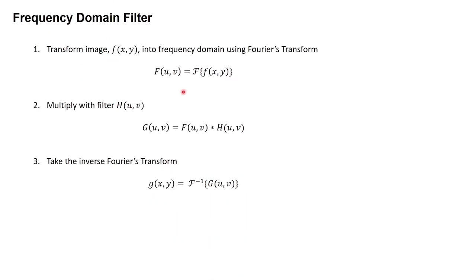In theory, if you want to apply an image filter in the frequency domain, first you need to transform your image from the spatial domain to the frequency domain using the Fourier transform. Next, you apply a filter by multiplying your image in the frequency domain with a filter transfer function H, and finally you take the inverse Fourier transform to get the filtered image in the spatial domain.